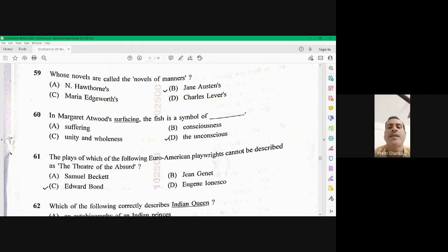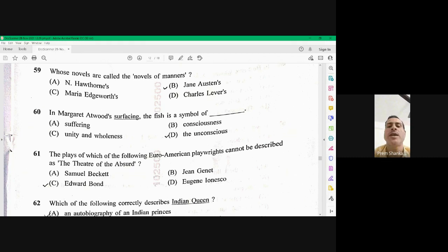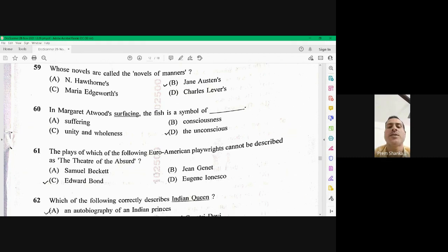Question number 61. The plays of which of the following Euro-American playwrights cannot be described as a theater of the absurd? So Samuel Beckett, Jean Janet, Eugene Ionesco, these three are the absurd writers. They are from the school of the theater of the absurd. Edward Bond is the right option. 61 is C.